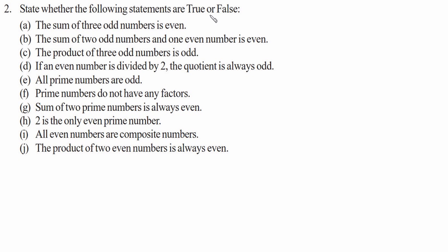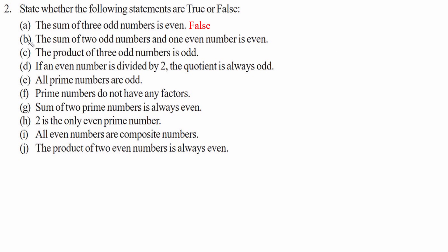Question two: state whether the following statements are true or false. Statement a — the sum of three odd numbers is even. Taking 1 plus 1 plus 1 gives 3, which is odd, therefore statement a is false. Statement b — the sum of two odd numbers and one even number is even. Taking 3 plus 5 plus 2 gives 10, which is even, therefore statement b is correct.